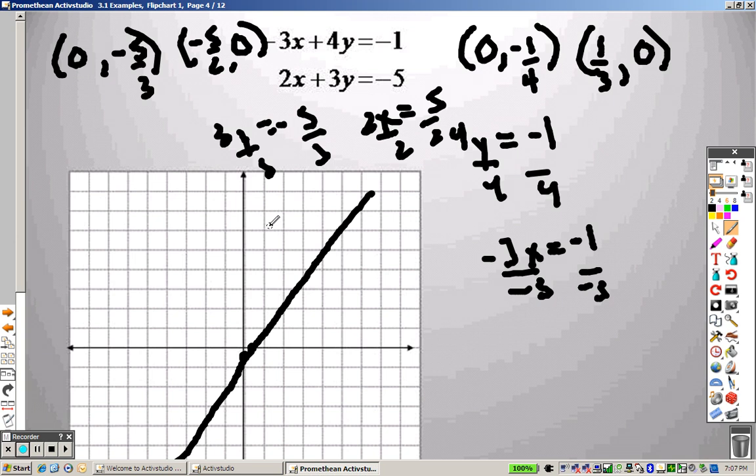So negative 5/3 is like negative 1 and 2/3. What that means is I go over nothing and go down 1 and 2/3, which is about right there. This one is negative 5/2, which is 2.5, and 2.5 is roughly right there. So I draw a line and connect those two points.